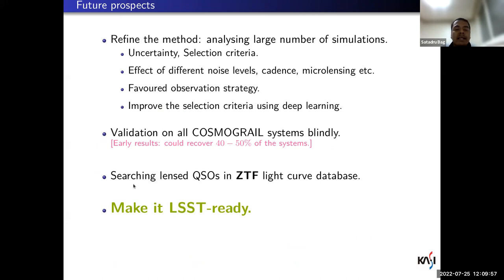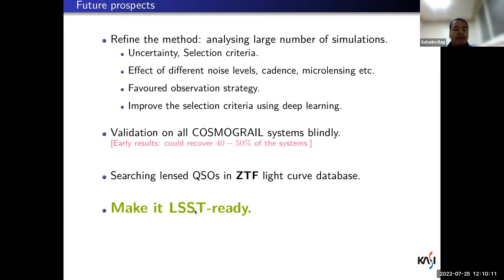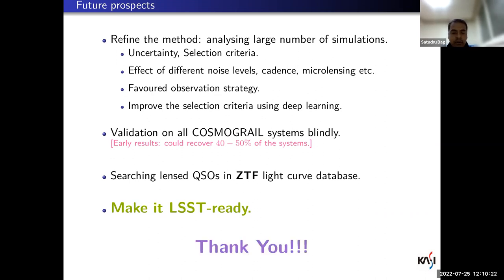We are also highlighting all the COSMOGRAIL systems — earlier we showed we could recover up to 50% of these systems using just the joint light curve. We are carrying out a search for lens quasars in the ZTF light curve database. The main goal is to make the pipeline ready for LSST/Rubin by optimizing it after the Phase 2 observing strategy recommendations become public. Thank you for giving me this opportunity to speak.